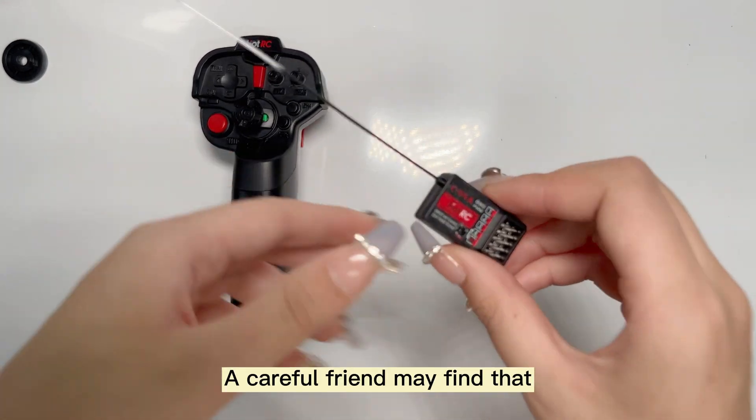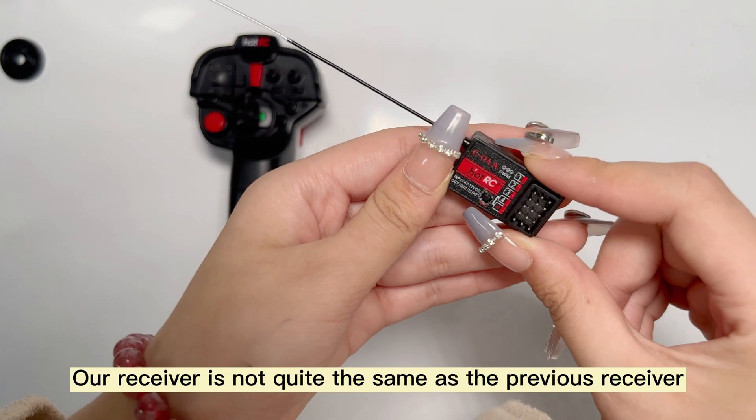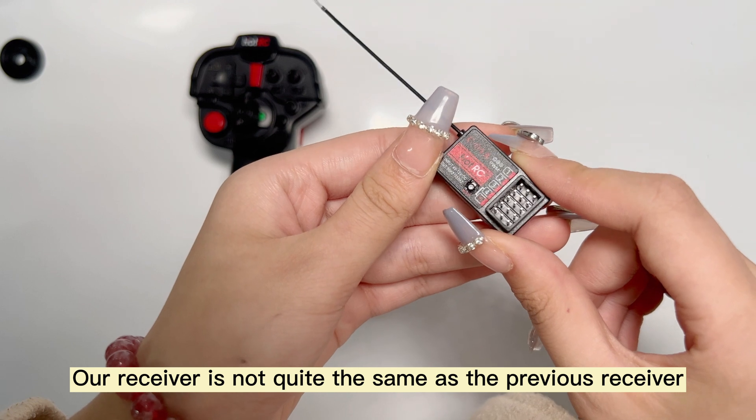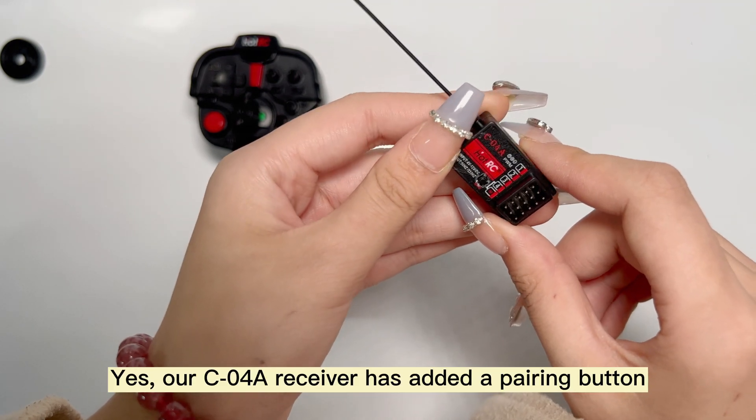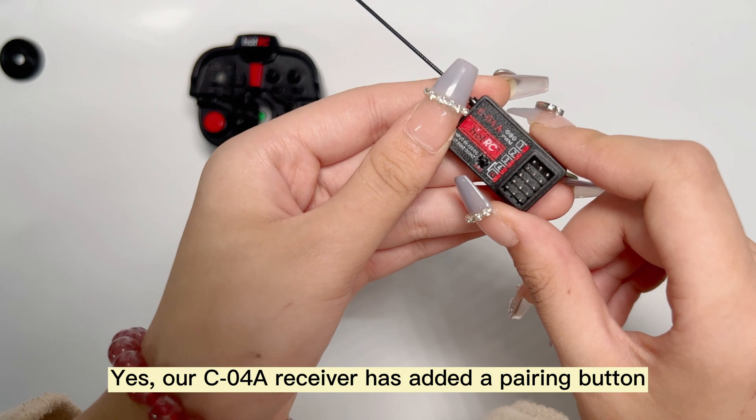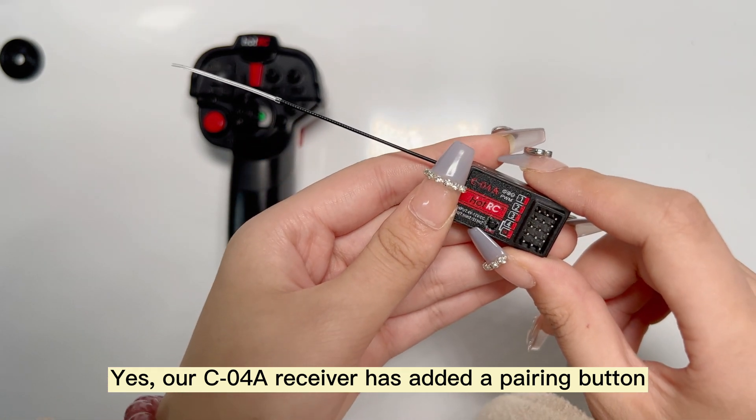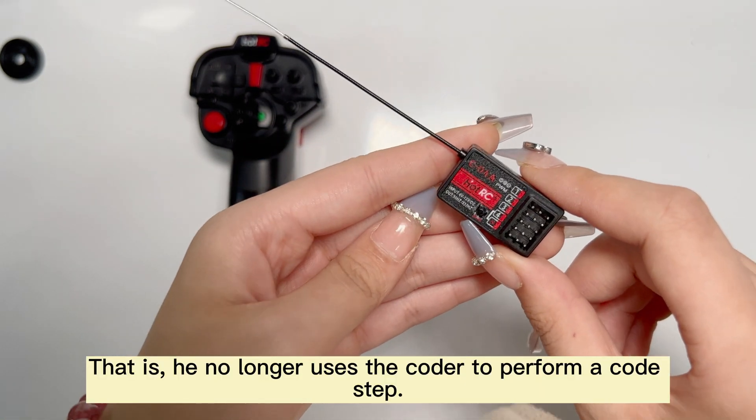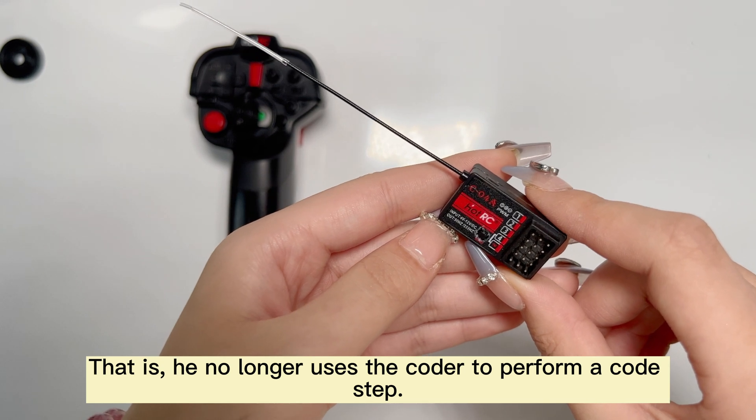A careful friend may find that this receiver is not quite the same as the previous receiver. Yes, our C-04A receiver has added a pairing button. That is, it no longer uses the coder to perform a code step.